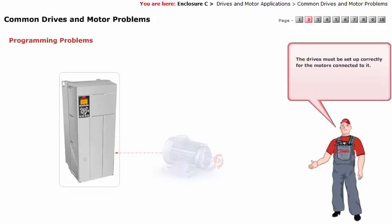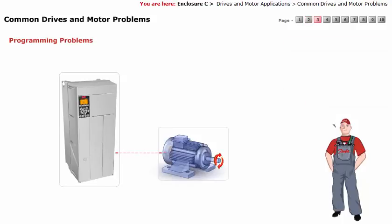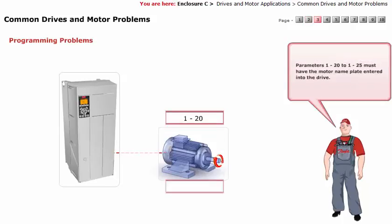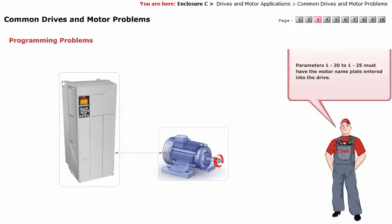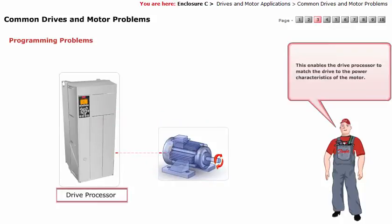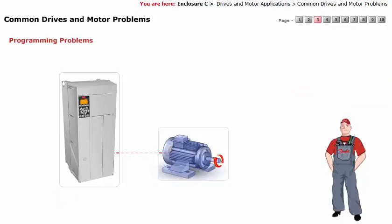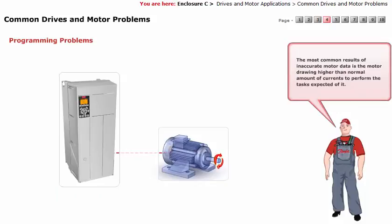The drives must be set up correctly for the motors connected to it. Parameters 1-20 to 1-25 must have the motor nameplate data entered into the drive. This enables the drive processor to match the drive to the power characteristics of the motor. The most common result of inaccurate motor data is the motor drawing a higher than normal amount of current to perform the task expected of it.